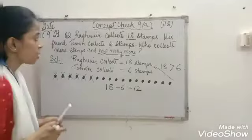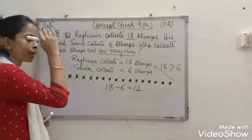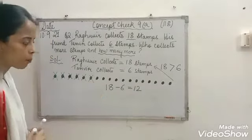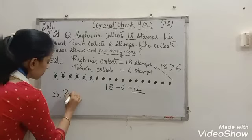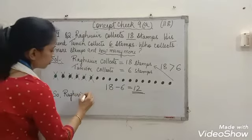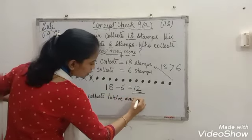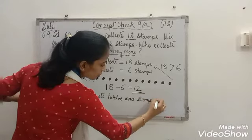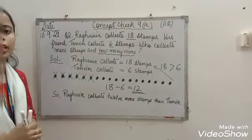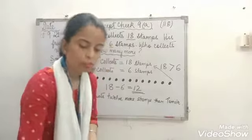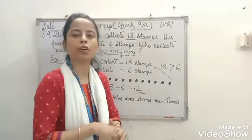So, how many more stamps does Ragumir collect than Tanvir? After representing numbers by drawing dots and writing in subtraction form, we get the difference as 12. So, Ragumir collects 12 more stamps than Tanvir. We have solved problems based on comparison situations by using the method — subtraction by drawing dots.